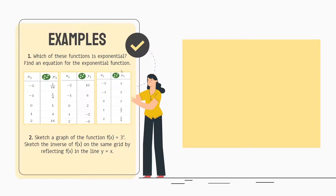Lastly, let's look at the third table. Identifying the point (1, 1/2), we get b equals 1/2. Checking: 1/2 to the power of negative 2 is 4, negative 1 gives 2, zero gives 1, and 1 gives 1/2 — all good so far. But 1/2 to the power of 2 should be 1/4; however, the table shows 1/8, which means this is not an exponential function and we cannot find an equation for it.